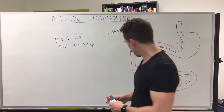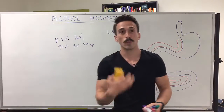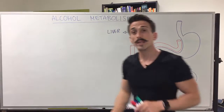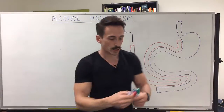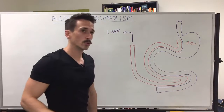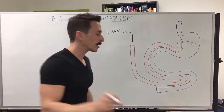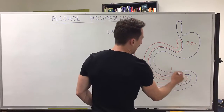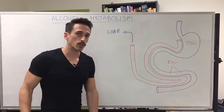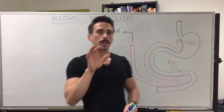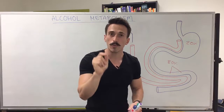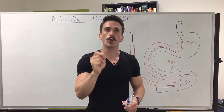When we ingest alcohol orally, when it gets to the stomach, around about 20% of that alcohol is actually absorbed — 20% is rapidly absorbed into the bloodstream. At the small intestines, that's where the remaining 80% is absorbed into the bloodstream. Because alcohol is water soluble, it actually transports very rapidly to every organ of the body.